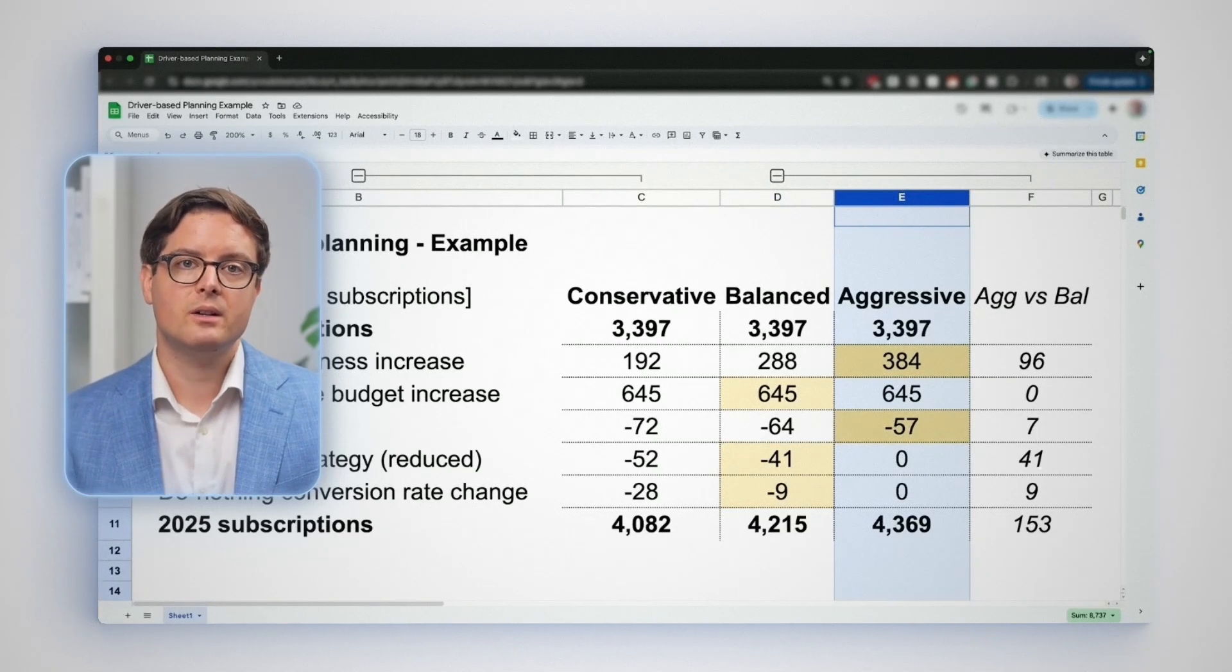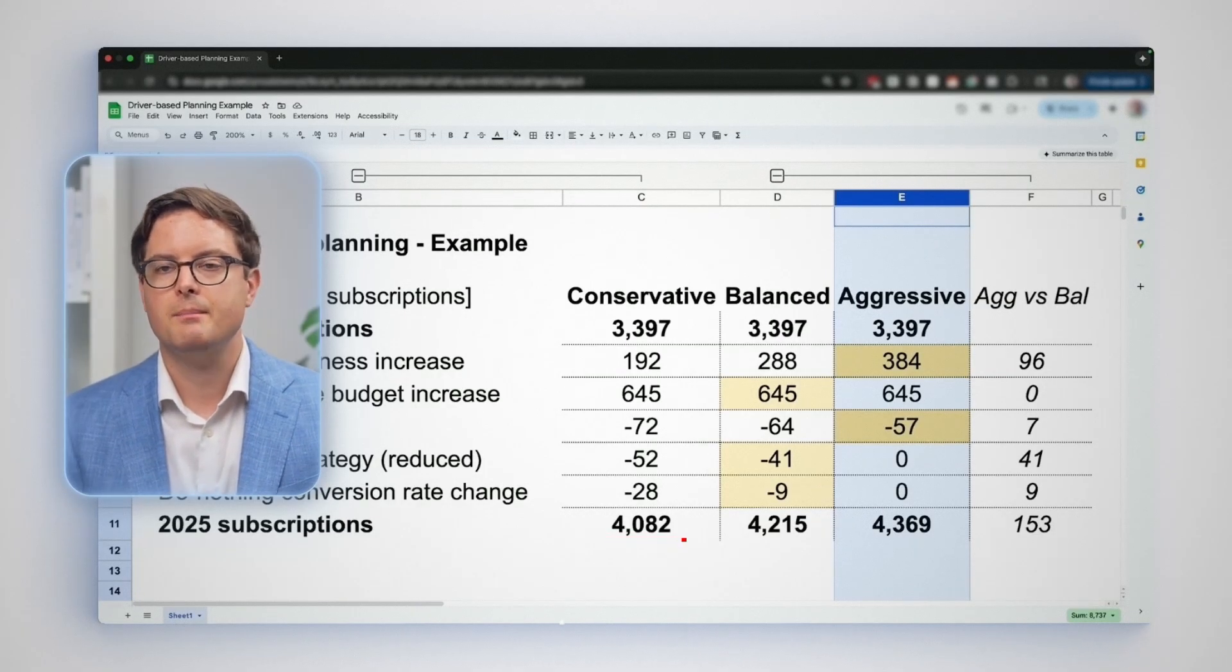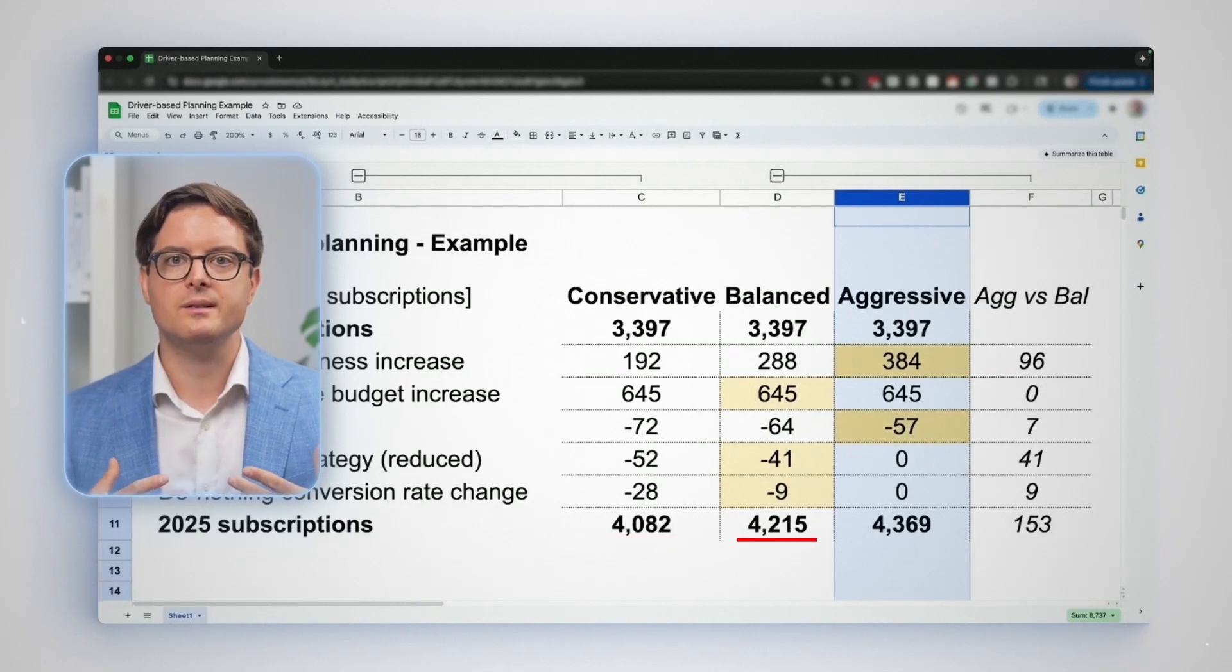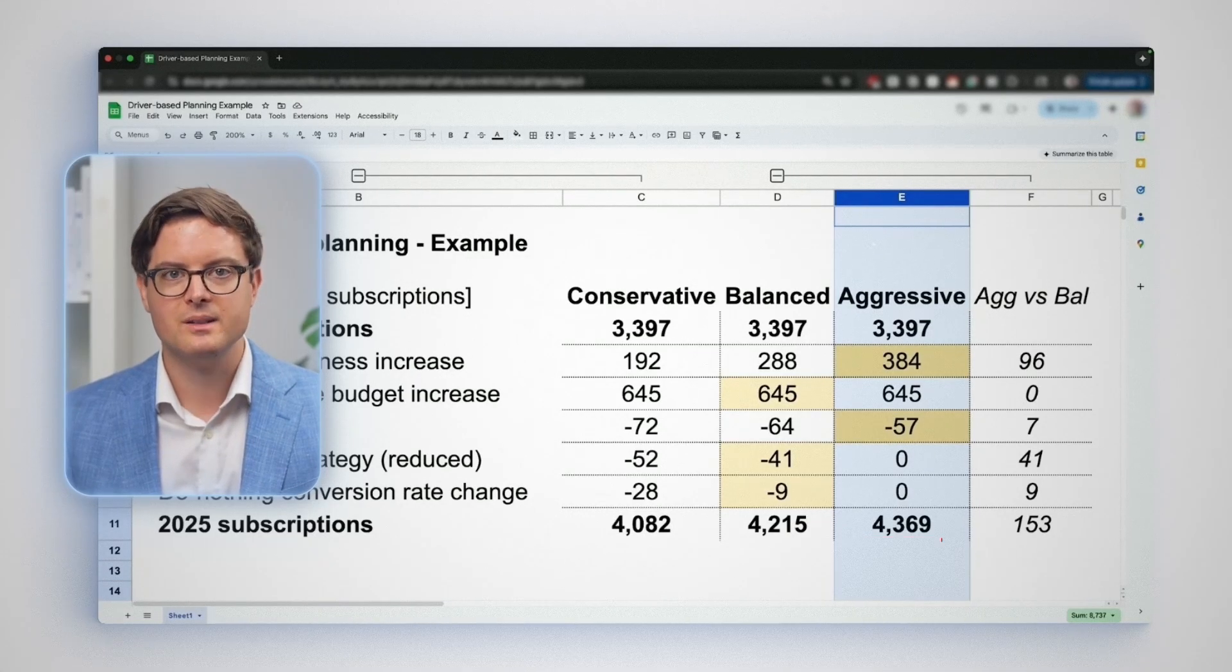When they ran all the numbers, the conservative scenario projected about 4,100 subscriptions, the balanced scenario hit around 4,200 subscriptions, and the aggressive scenario came in at about 4,400 subscriptions.